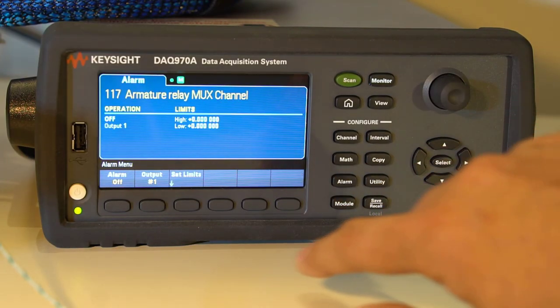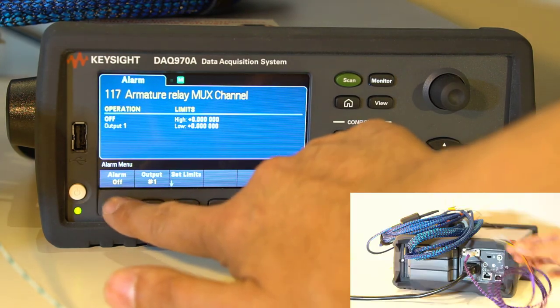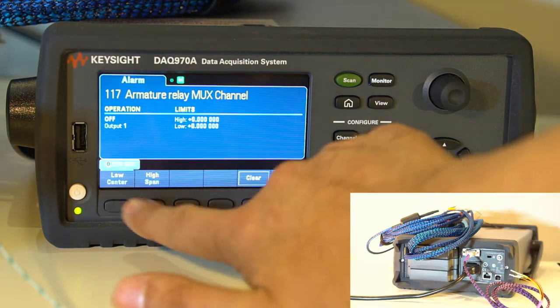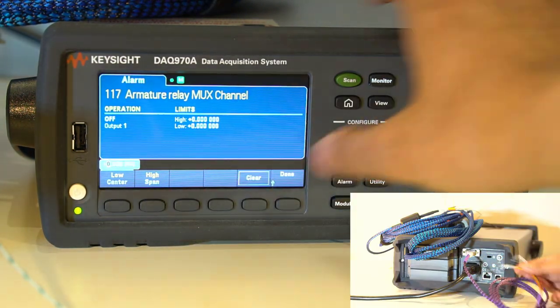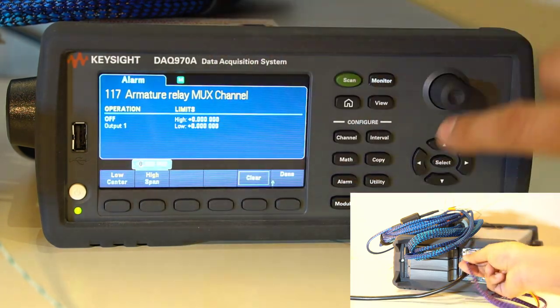A useful feature is the built-in alarm outputs. There are four of them at 3.3 volt logic levels, and they can latch or follow the assigned channels when a high or low threshold is exceeded.